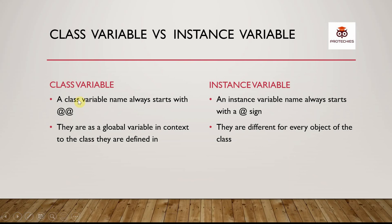A class variable will always start with the double at sign, and the instance variable will always start with the single at sign. This is the syntactical difference.